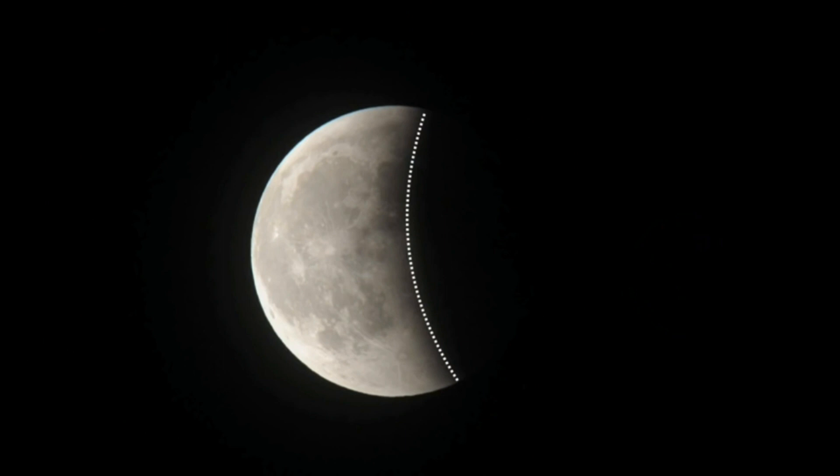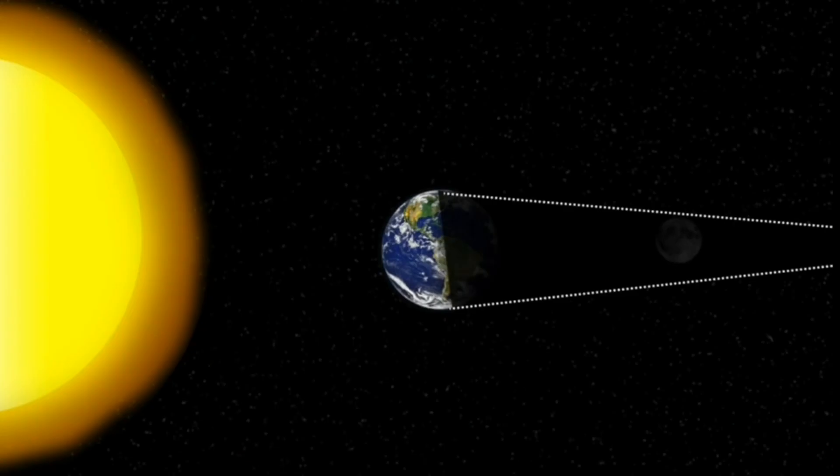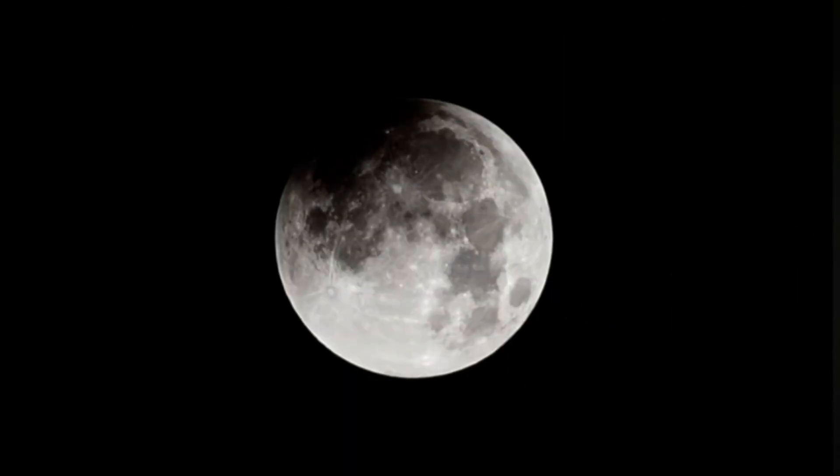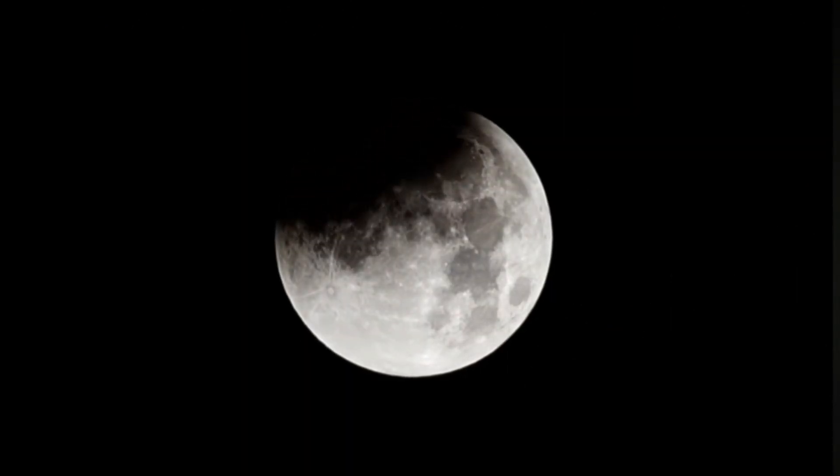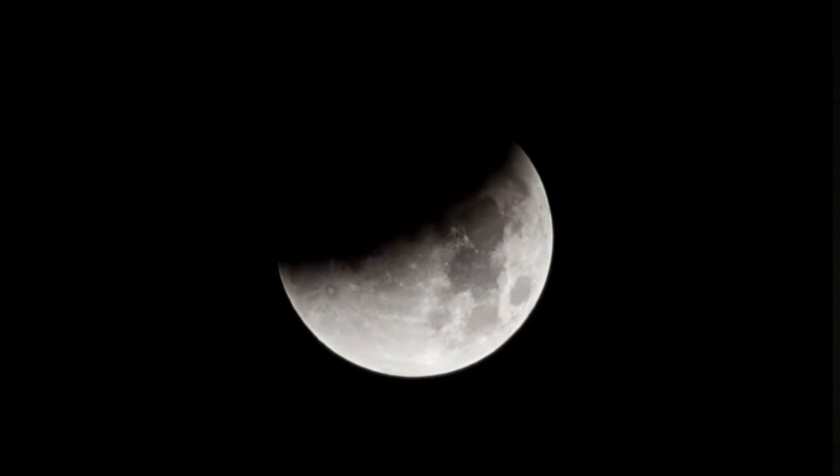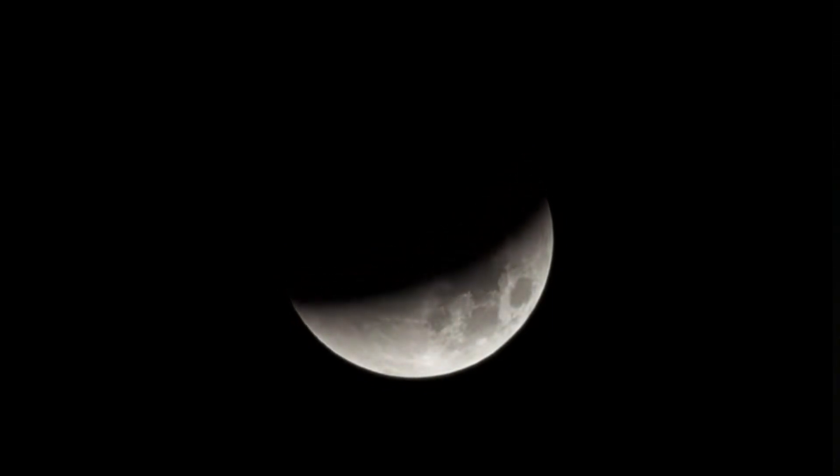As you can see, the Earth's shadow curved shape is falling on the Moon. In the process, you might think that the Earth's shadow might completely darken the Moon. But that's not true, my friends. Let's see what actually happens.